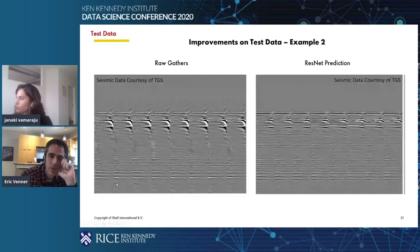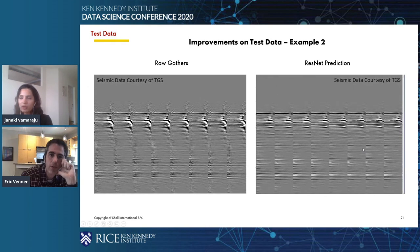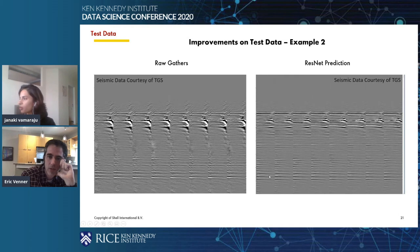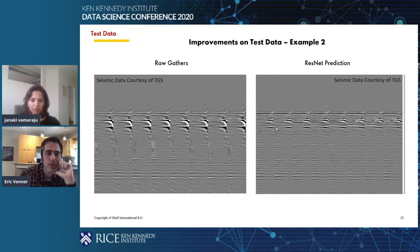Just one quick question: when you're showing the raw gathers — the gray pictures — can you talk a little more about how to interpret those images? Sure. You can see that there's a lot of noise, especially in the deeper parts, and also a lot of multiples. That is eliminated in the predicted gathers. We want to do that because the next step after denoising is to pick travel time events or these curves, and they are used for solving the linear tomography equations. While denoising, we also want to make sure that the amplitudes, curvatures, and frequencies are preserved.